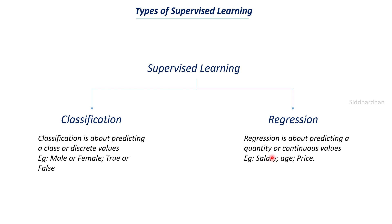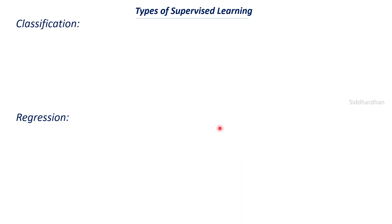In regression, we predict some quantity or continuous values, which can be decimal or numerical. For example, predicting the salary of a person based on work experience, predicting the age of a person from features, or predicting the price of a house based on the number of rooms and square meters — these are regression problems. To contrast: predicting whether a person has diabetes or not is classification, whereas predicting the actual blood sugar level as an accurate number is regression, since we want a continuous value.